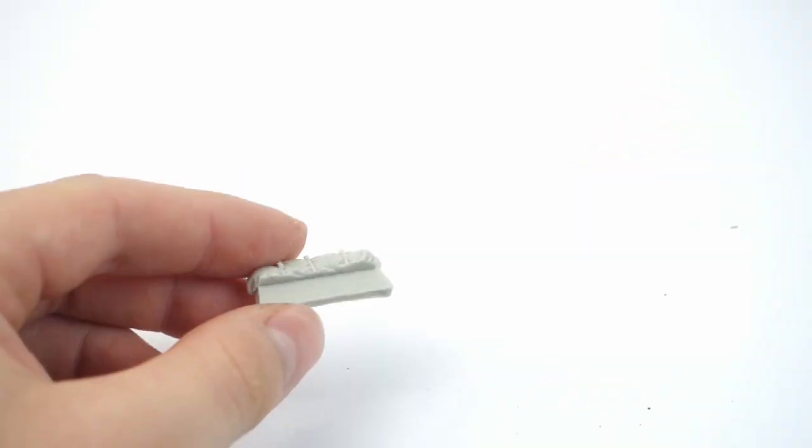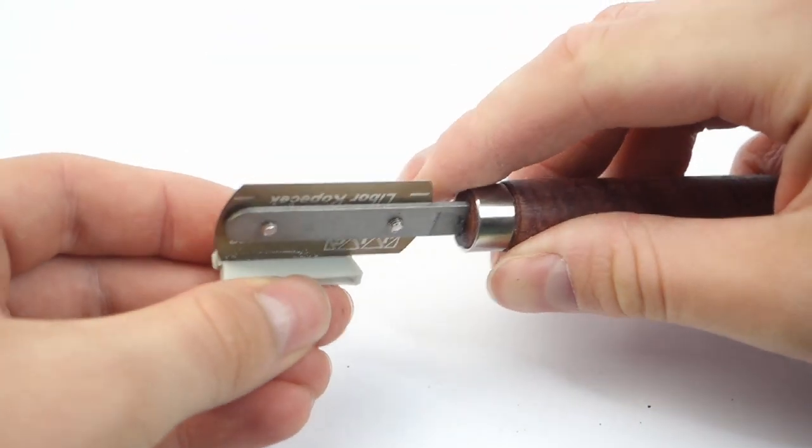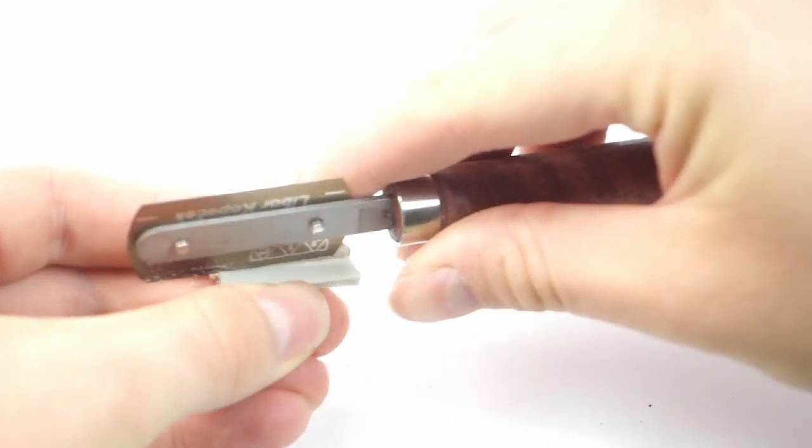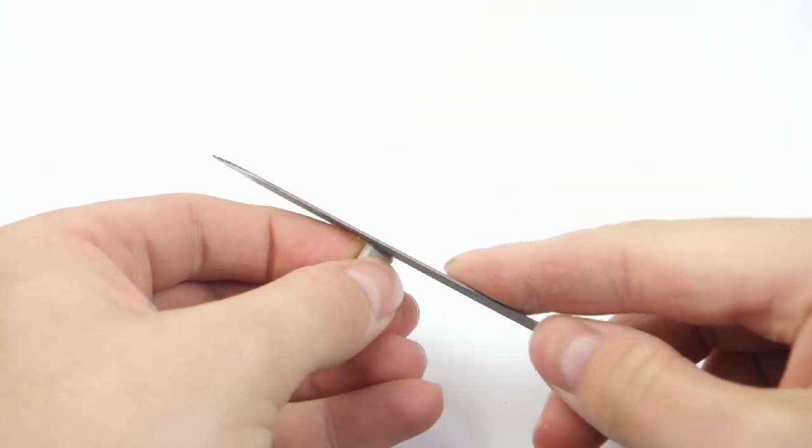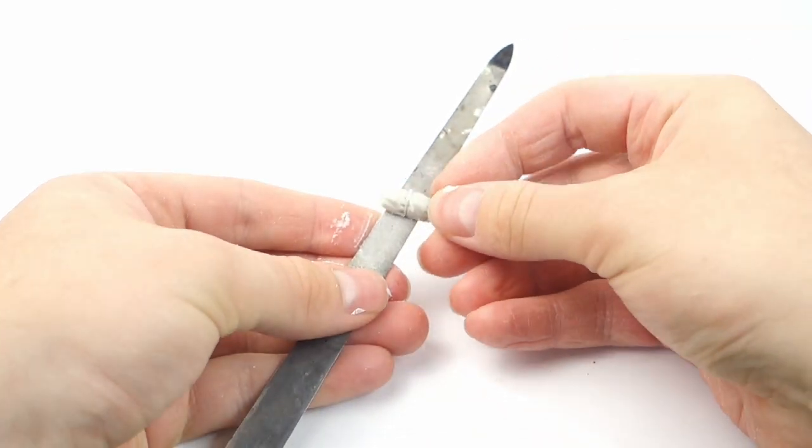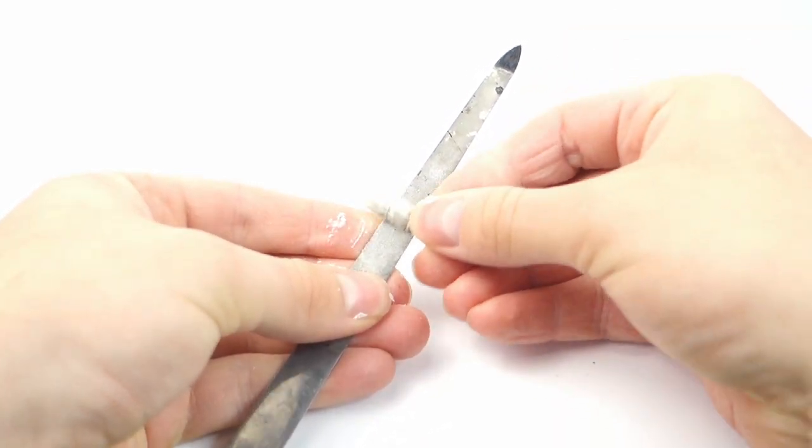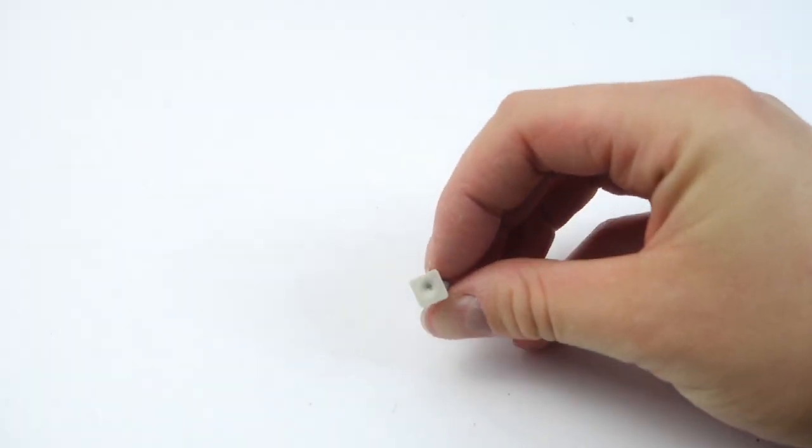Some of the resin parts can be removed from their sprues using side cutters, but the bigger ones require a saw. After slight cleanup, they are ready to be placed on the model. I also drilled and improved the bottom of this traffic cone since it will be visible on my model.